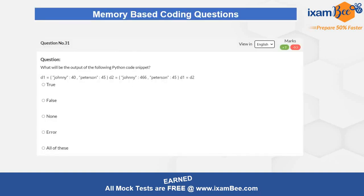Now let's start with the questions. I will show you 10 questions and you have to attempt all of them. The answers will be given at the end and you have to evaluate your attempt — give yourself a plus one for every correct answer and minus 0.25 for every incorrect answer. The first question is related to a Python code and you have to understand it.